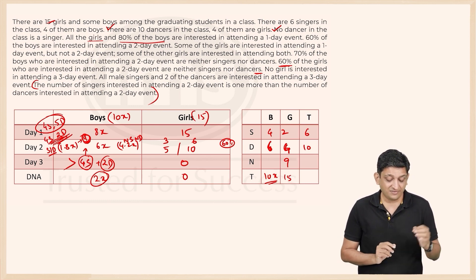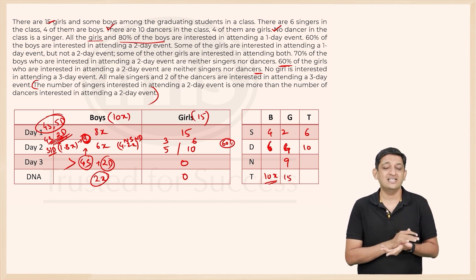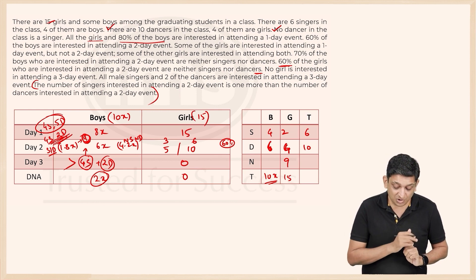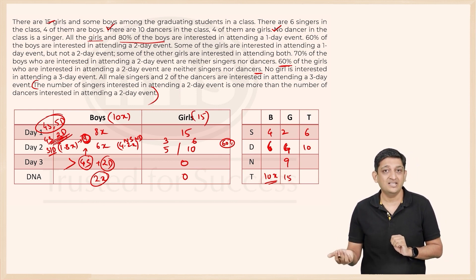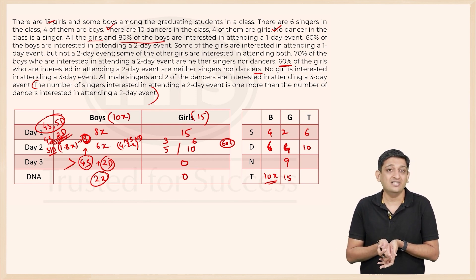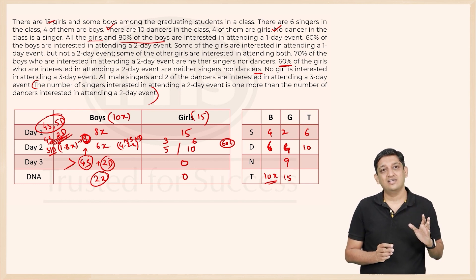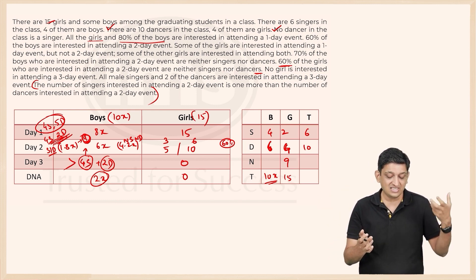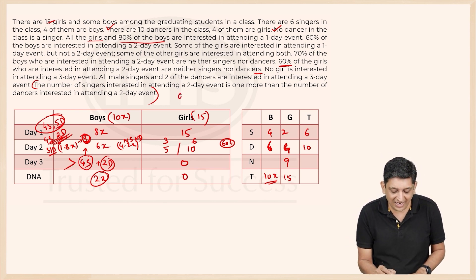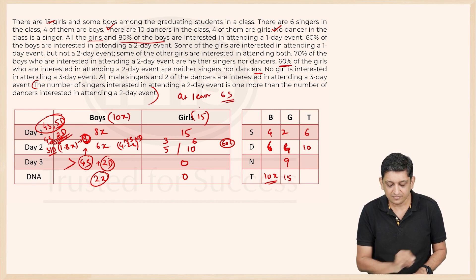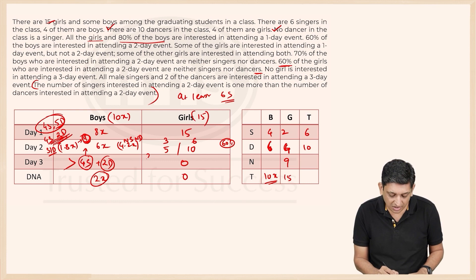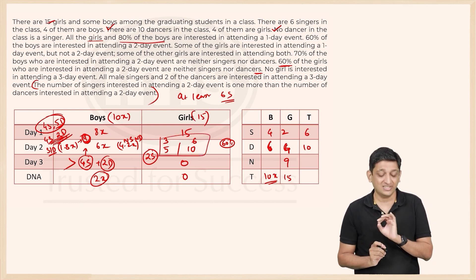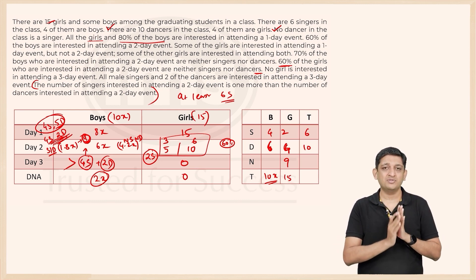Now applying the last clue: the number of singers attending the two-day event must be one more than the number of dancers. We have 5 male dancers, so we need at least 6 singers total. With 4 male singers already accounted for, we need 2 female singers — which matches perfectly, giving us a 6 singers to 5 dancers ratio.